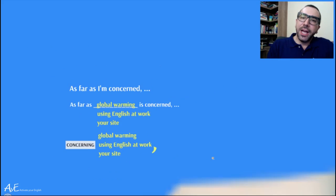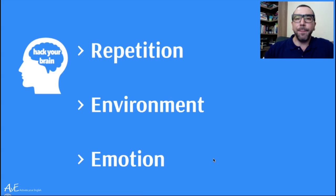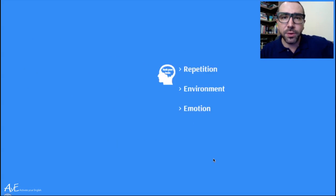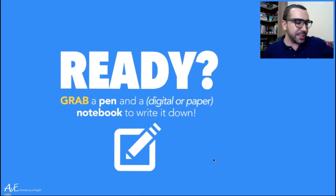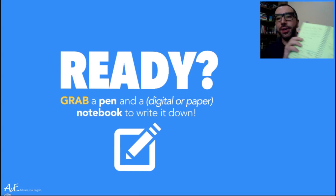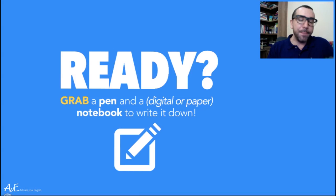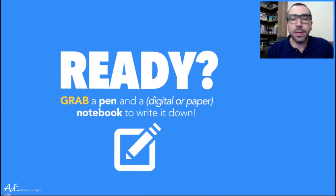As we talked about brain rules and how to hack your brain — repetition, environment, and emotion — they are the tripod for you to expand your vocabulary. One of the things I like doing is writing down what I've learned from a session or a podcast. Grab a pen and a notebook — it could be a digital notebook like Evernote, or a paper notebook. I like writing on paper because the physical act of writing really enhances your memory.